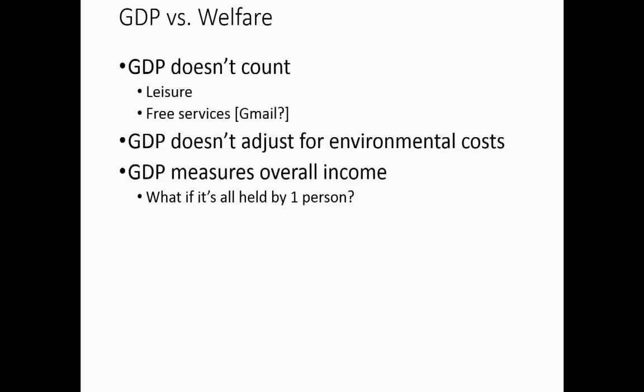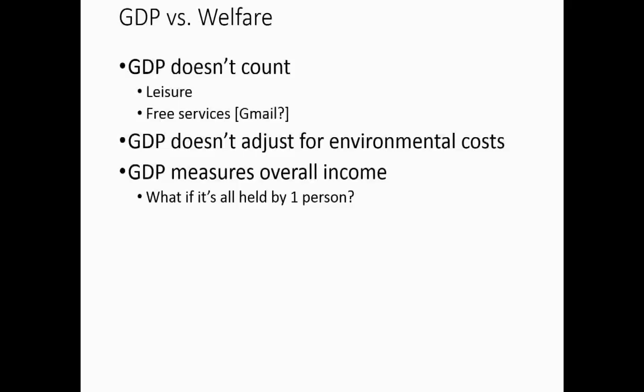GDP also measures total production, not how it's distributed. GDP per capita is just total production divided by the number of people, but in the real world production is not divided evenly. If two countries have identical production but in one everything belongs to one person, that country is probably not so well off in many ways. GDP does not deal with inequality at all. GDP growth also seems lower recently than in 1970–1975 partly because what we produce now is harder to measure — we've moved from manufactured goods, which are easy to count, to IT services. Measuring the value of Uber, Gmail, or Facebook is really hard, and that can create biases.